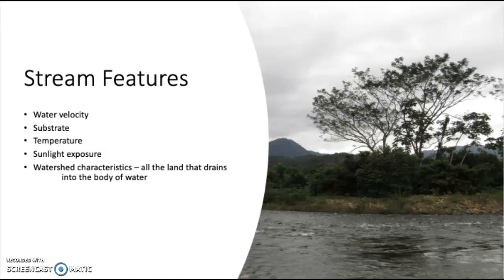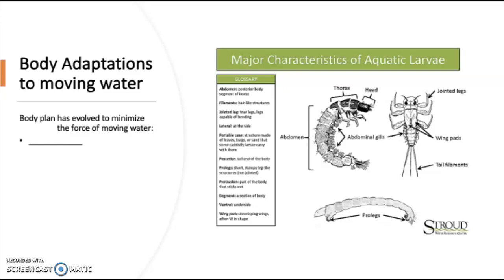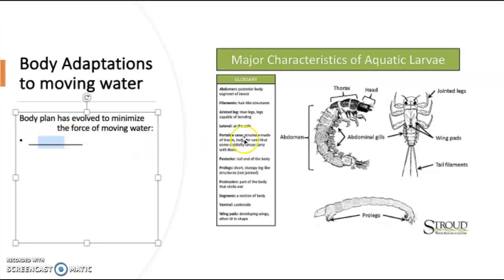Now, how do animals figure out how to live in moving water? They have adaptations to survive there. Their body plans have evolved to minimize the impact of the water hitting them — they're not trying to stop the water, just minimize the force. Some macro invertebrates have a flattened body plan. Think of a frisbee laid flat in water: there's a very small surface area for the water to hit, and it slides over the top. A flattened body plan allows the animal to be streamlined and survive in the current.